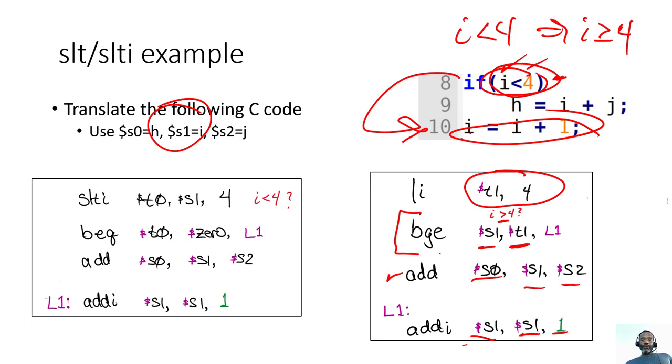Now branch if greater than or equal to is convenient because there is no instruction that directly translates. There's i greater than or equal to 4 requires a pseudo-instruction. There's no 32-bit word that converts this or represents this. There's no 32-bit word that represents the BGE. So BGE is actually a pseudo-instruction. Now it's convenient, but the logic is a bit tougher.